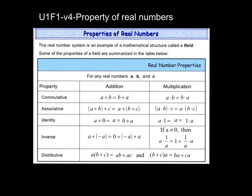Identity property. This is where, if you want the answer to equal itself — here A is equal to A — what do you add to A? You add 0 to A, because A plus 0 is still A. Or 0 plus A is A. Same thing in multiplication: if you want A to be equal to A, you multiply it by 1. A times 1 is still A.